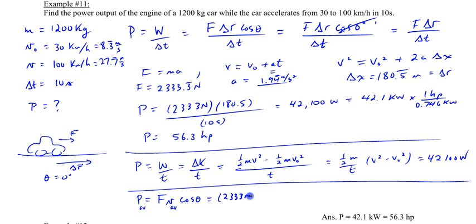Your average velocity would be the average between these two values. So 8.3 and 27.8 divided by 2 in meters per second, and then multiply by the cosine of zero degrees. And this should give you 42,100 watts.